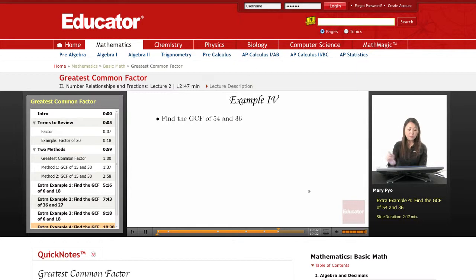Okay, last example, 54 and 36. Again, these numbers are a little big, so you can just think of a small common factor.